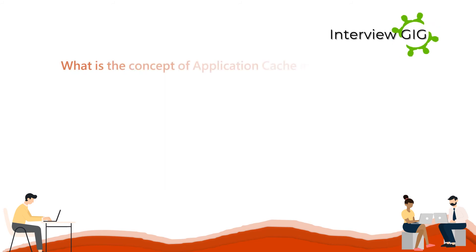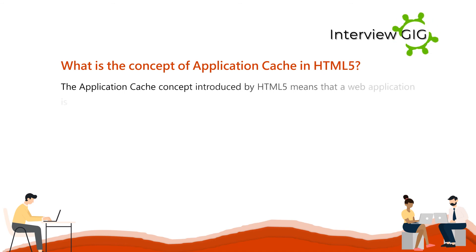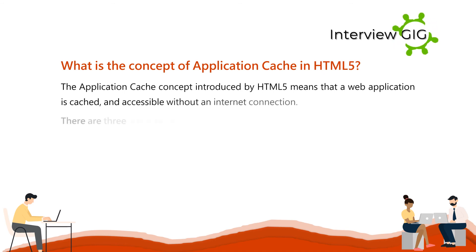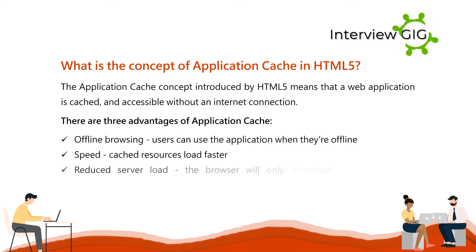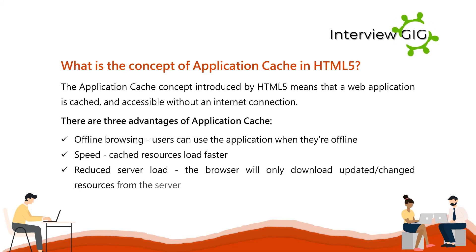What is the concept of application cache in HTML5? What are its advantages? The application cache concept introduced by HTML5 means that a web application is cached and accessible without an internet connection. There are three advantages: offline browsing, where users can use the application when they're offline; speed, as cached resources load faster; and reduced server load, as the browser will only download updated or changed resources from the server.